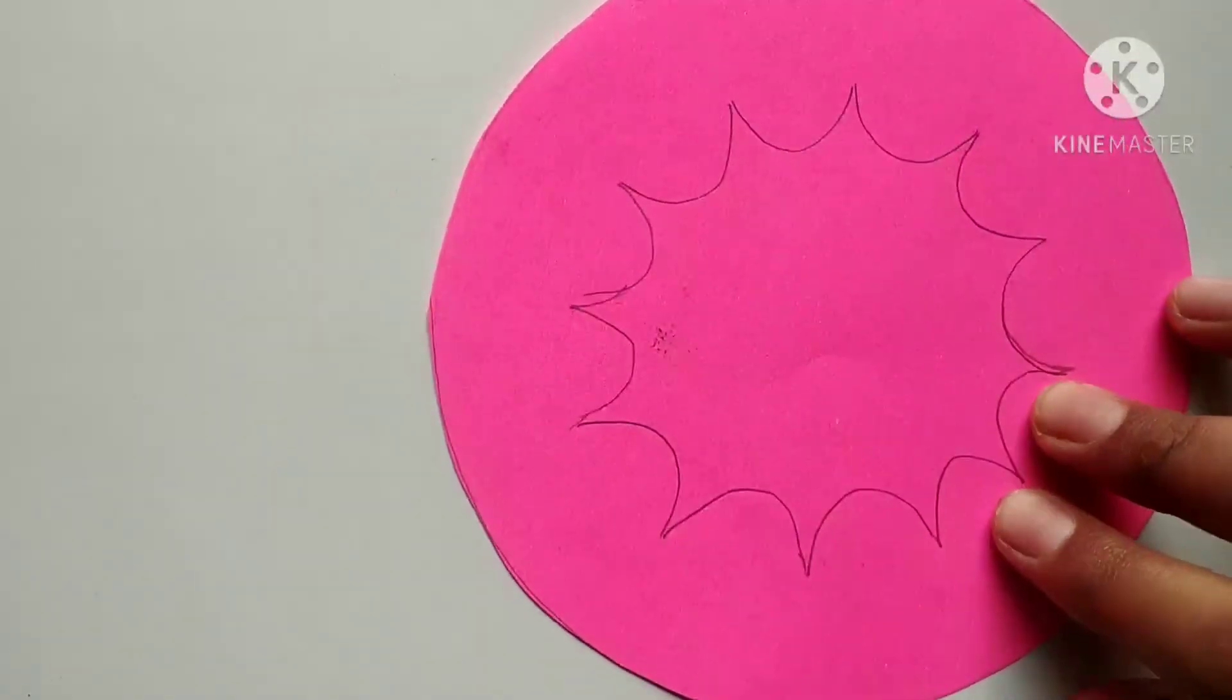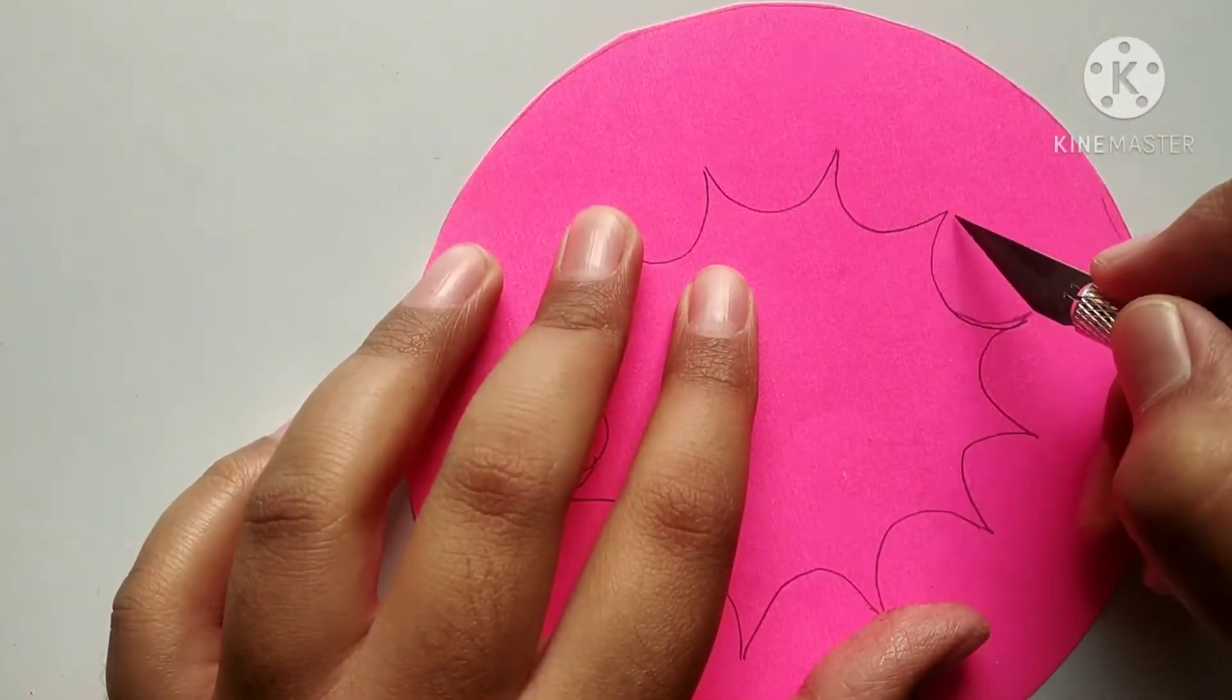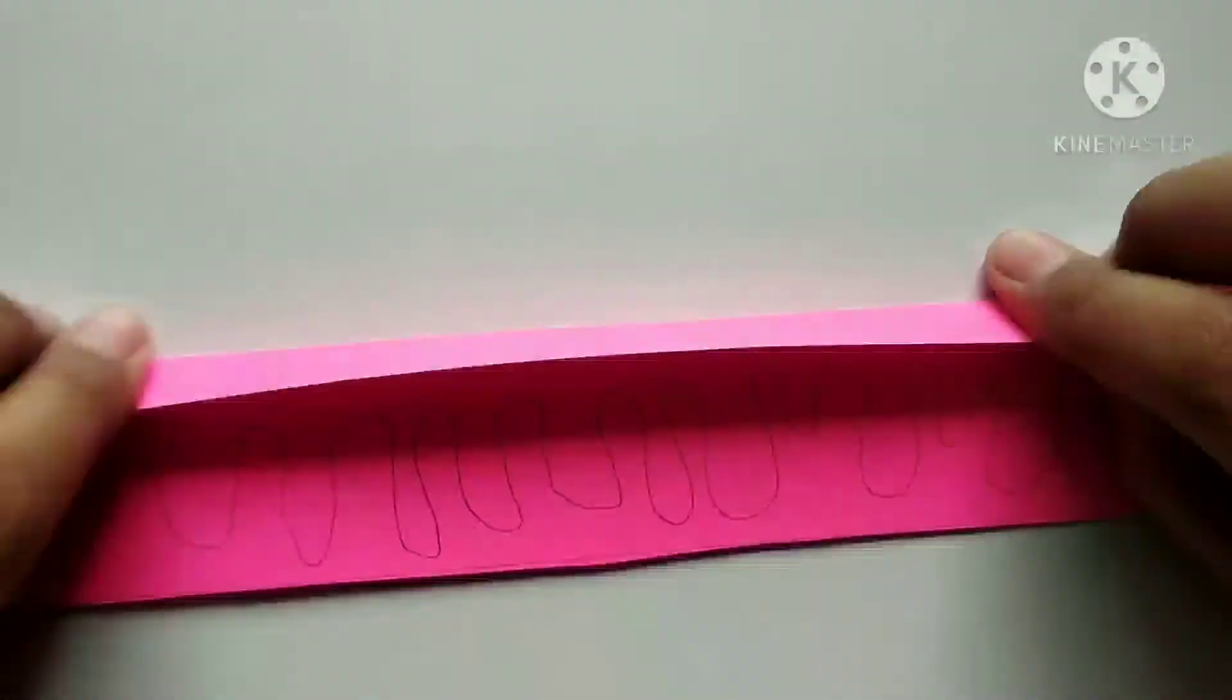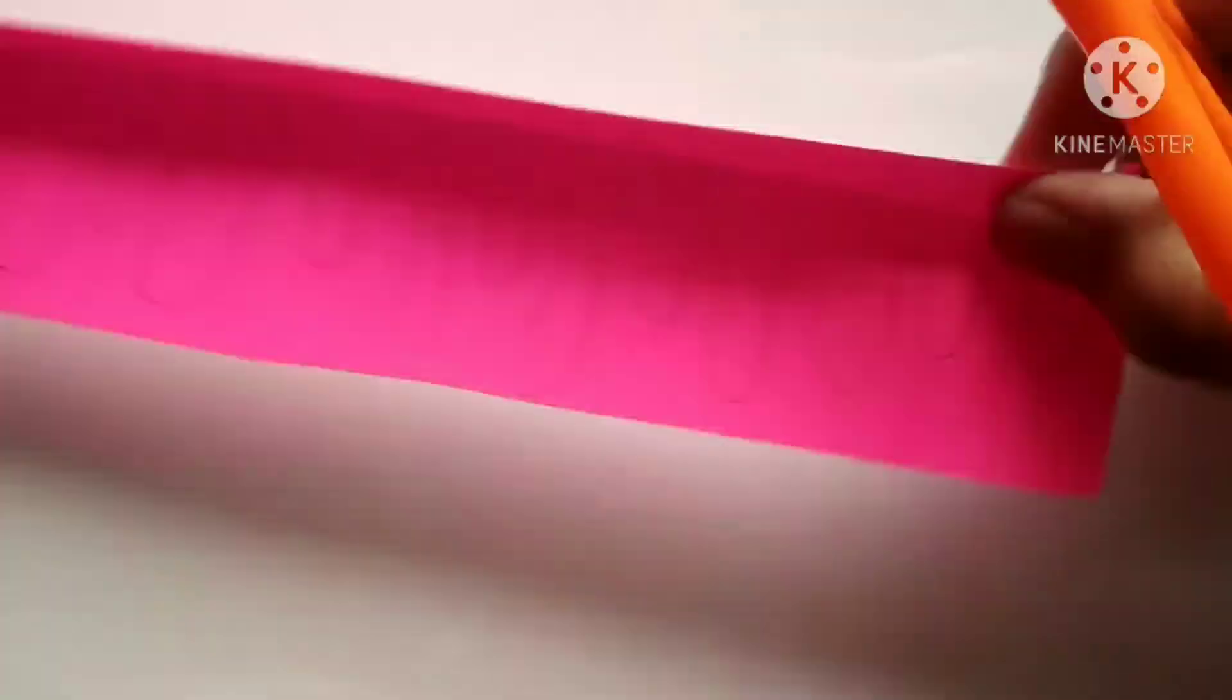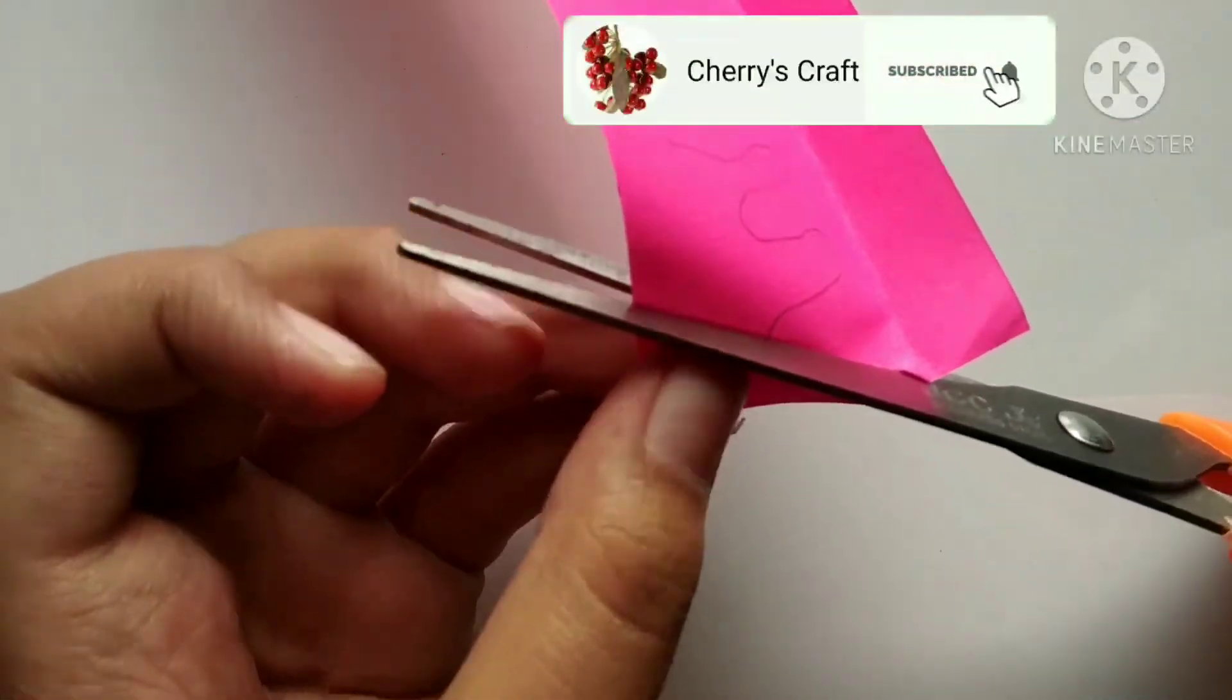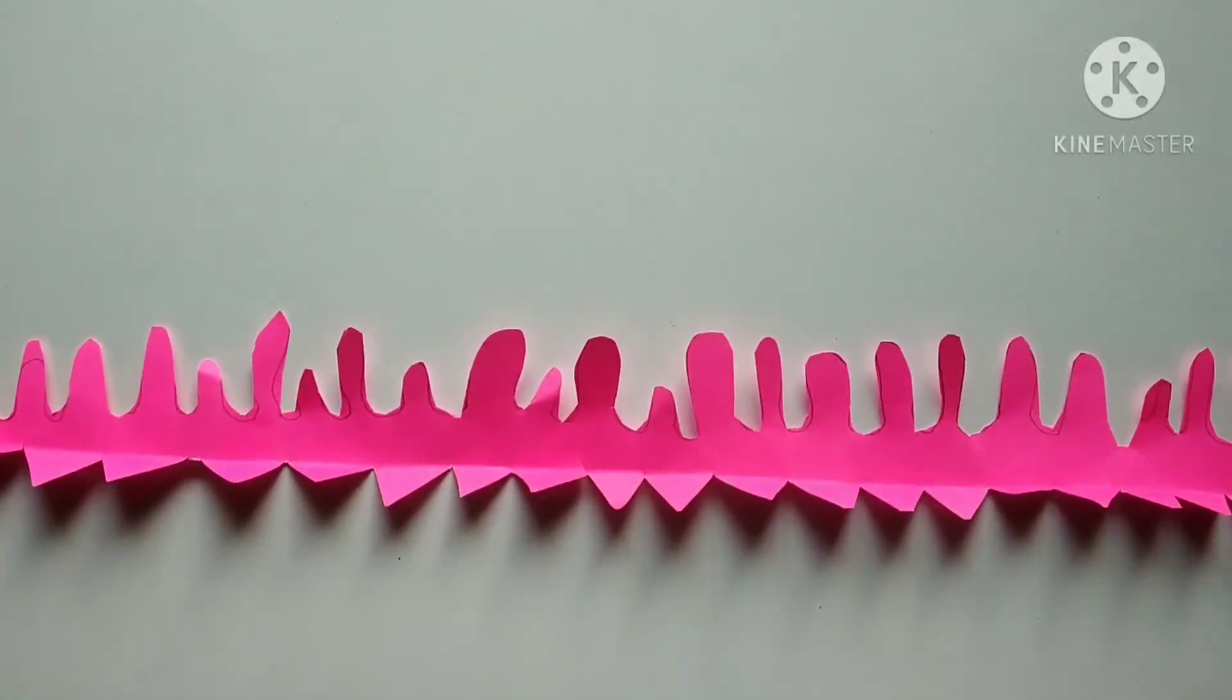For making the cap, we need to take another circle. Friends, we need to take a circle and draw a design on it, then cut along this line. After cutting, we need to take a strip paper, fold the side, and cut a triangle design. After cutting, it seems to look like this.